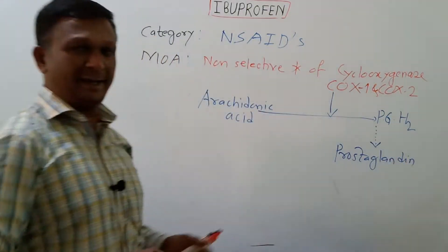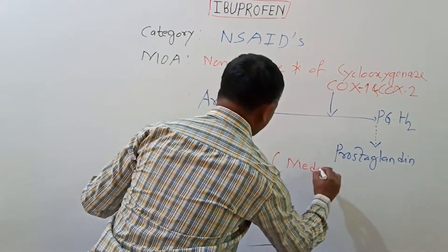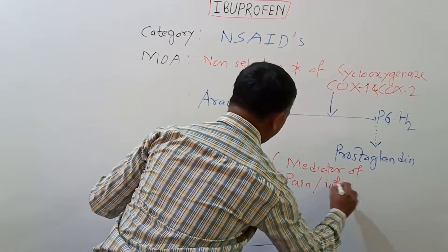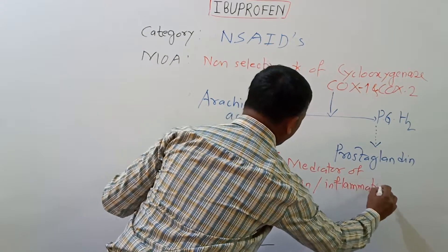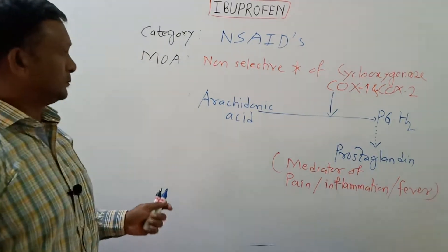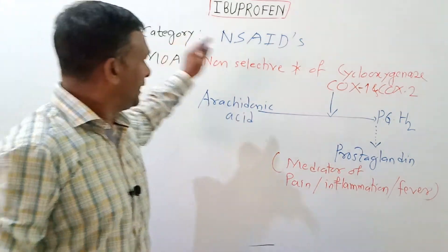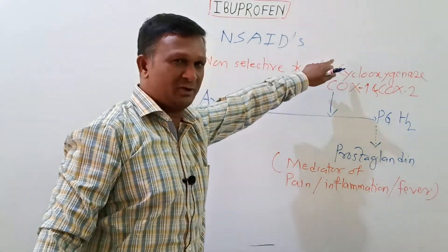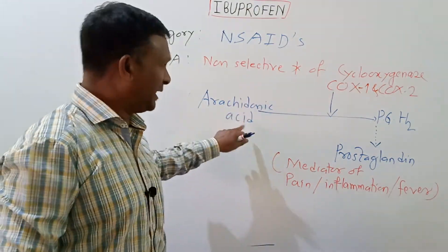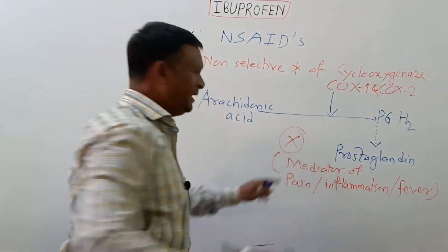The prostaglandin is mediator of pain, inflammation and fever. Thus, when ibuprofen is given, it inhibits the enzyme cyclooxygenase and brings about the inhibition of this conversion, arachidonic acid to prostaglandin. As prostaglandin synthesis is inhibited,